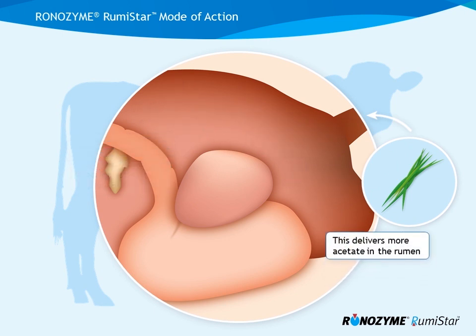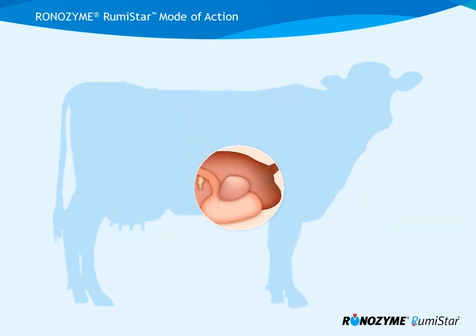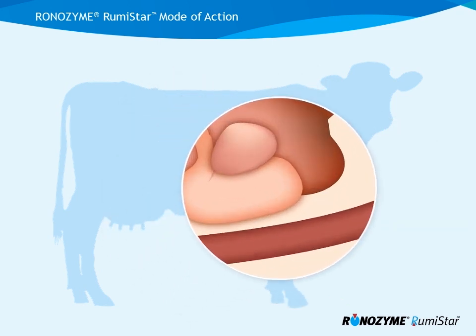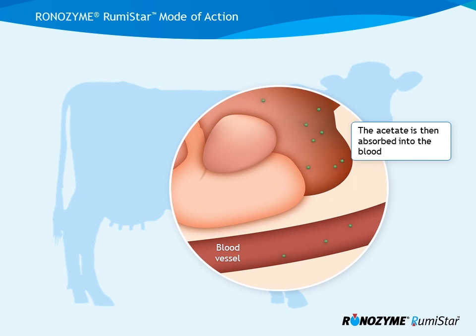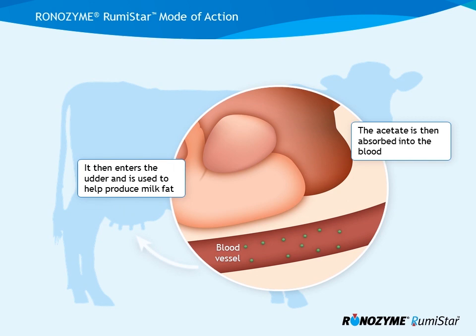This delivers more acetate in the rumen. The acetate is then absorbed into the blood, where it enters the udder and is used to help produce milk fat.